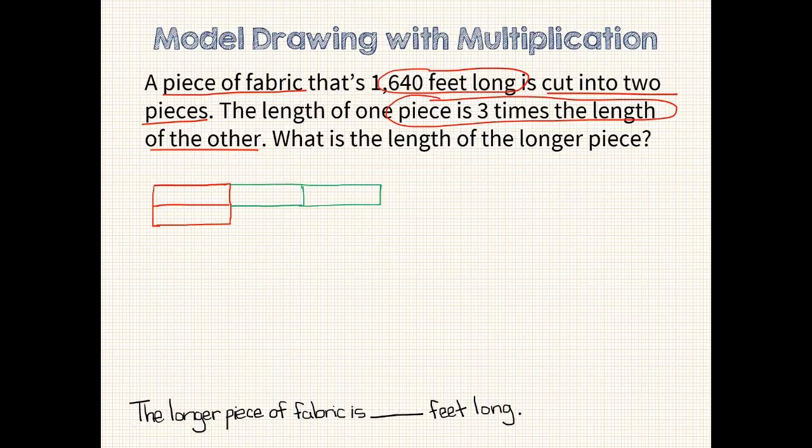Before I can jump into the math, I need to fill in my question mark and what I know. Can you see what we have to do now? We need to find out the length of each unit. Since I know that 4 units, that's how many we have, is equal to 1,640 feet, that means that 1 unit equals 1,640 divided by 4, which is 410. Let's go ahead and fill those unit bars in.